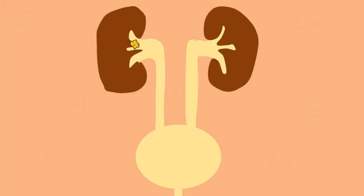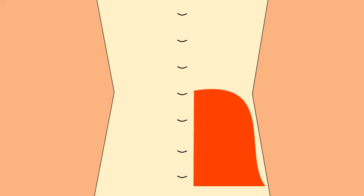Many calculi are asymptomatic, but some may cause renal colic. When the calculus migrates down the ureter, it irritates the ureteral mucosa. This causes ureteral spasm with dilatation and stretching of the ureter, causing sudden severe pain in the lumbar region. The pain usually radiates to the ipsilateral flank and iliac fossa.